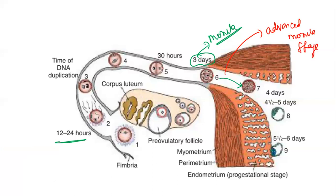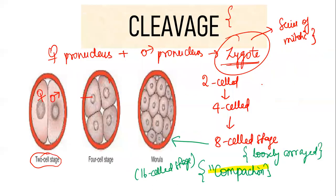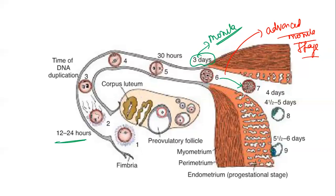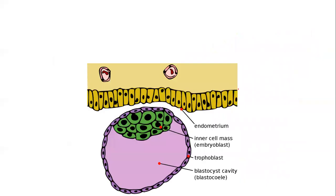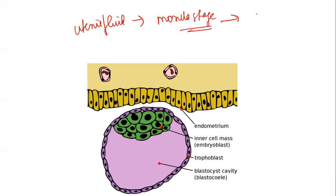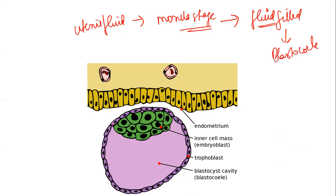For the zygote to be implanted, it must undergo cleavage to form the 32-cell advanced morula stage, which then enters the uterine cavity. Once inside the uterine cavity, the uterine fluid starts invaginating into this advanced morula stage, forming a fluid-filled cavity — similar to the antrum seen in oogenesis — called the blastocele.